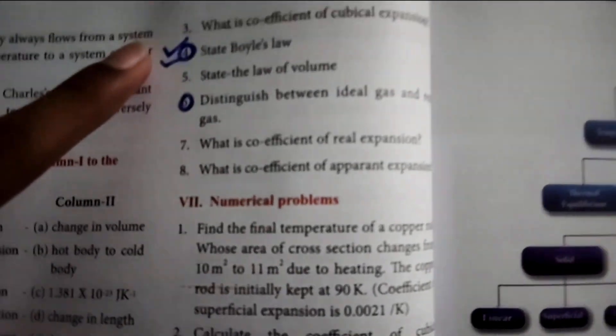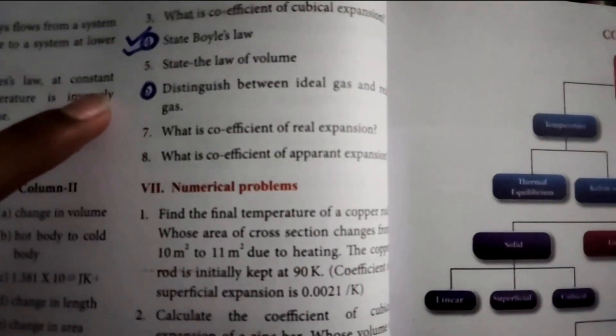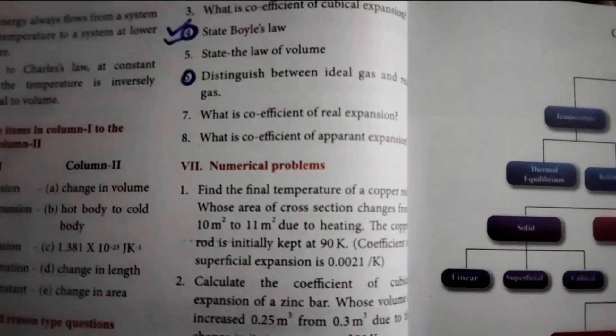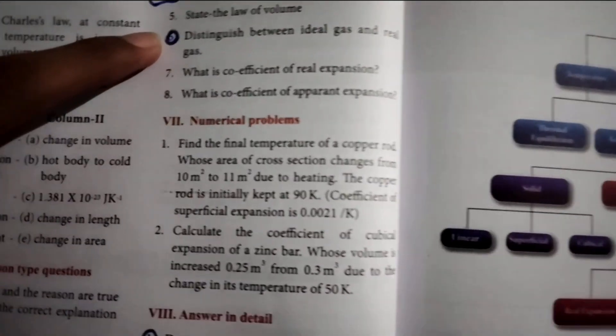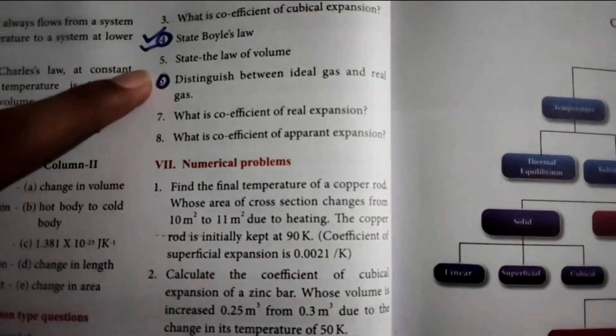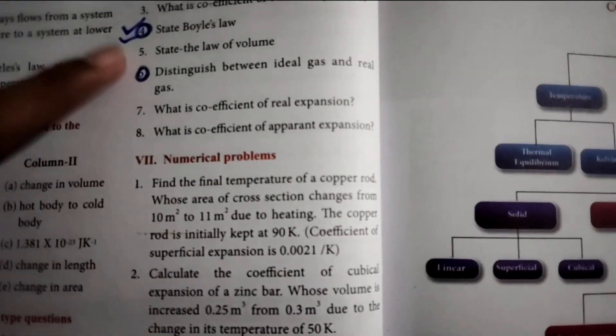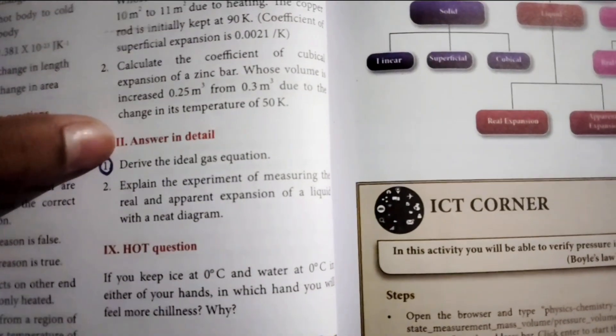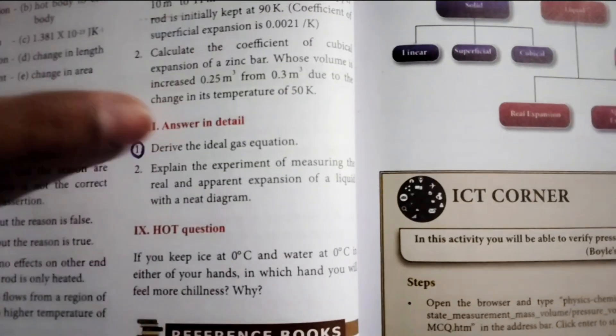First question, second question, fourth question, and sixth question — these are two-mark important questions. This is a 4-mark question. Next, this is the ideal gas equation. This is an important question.